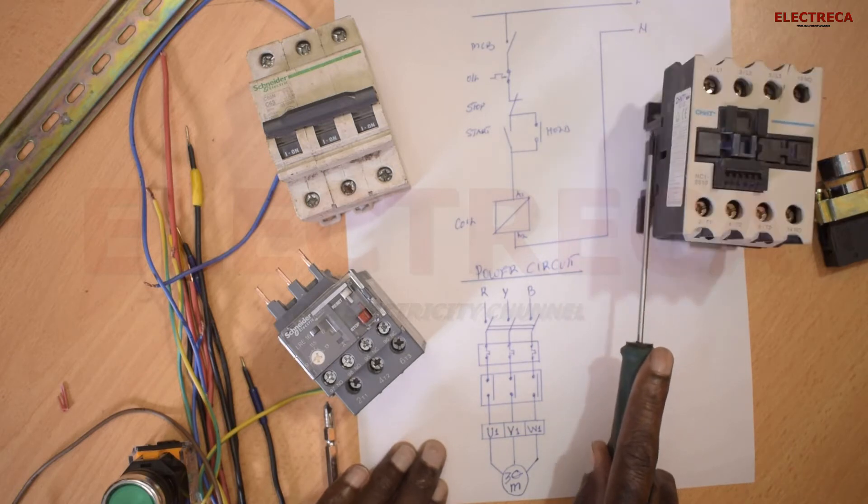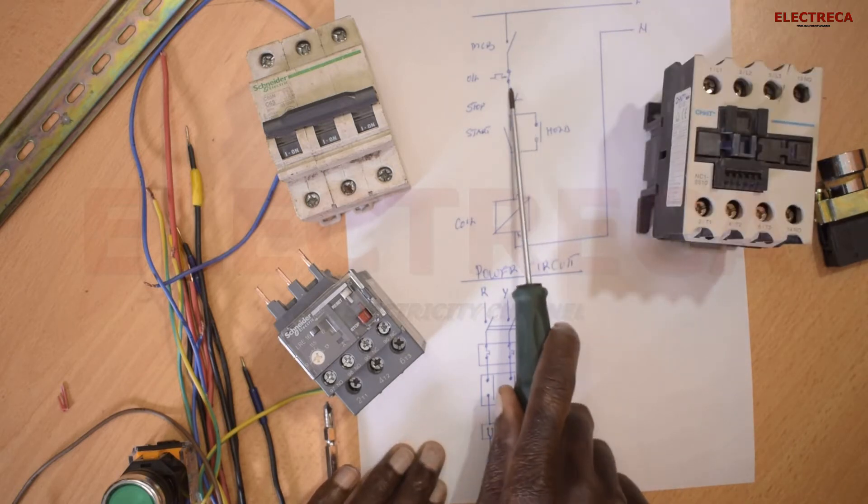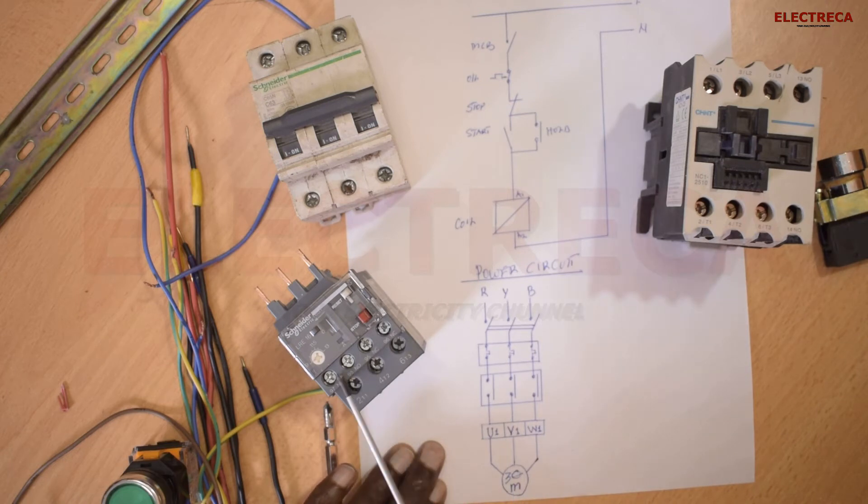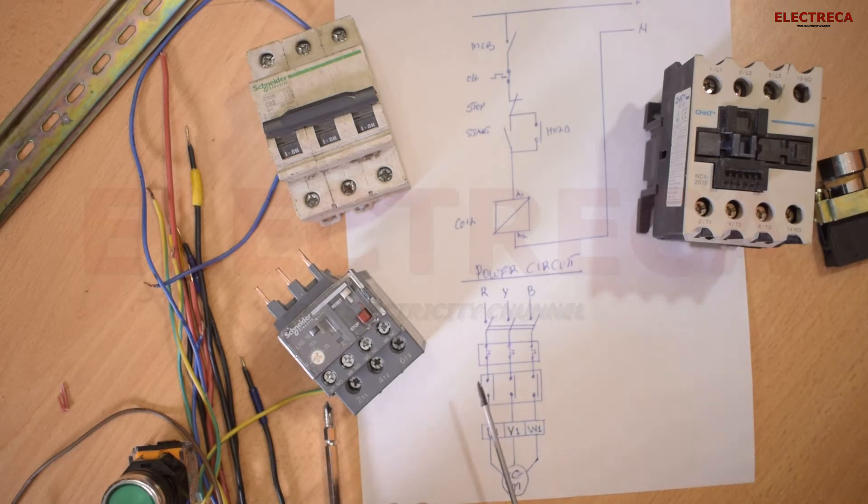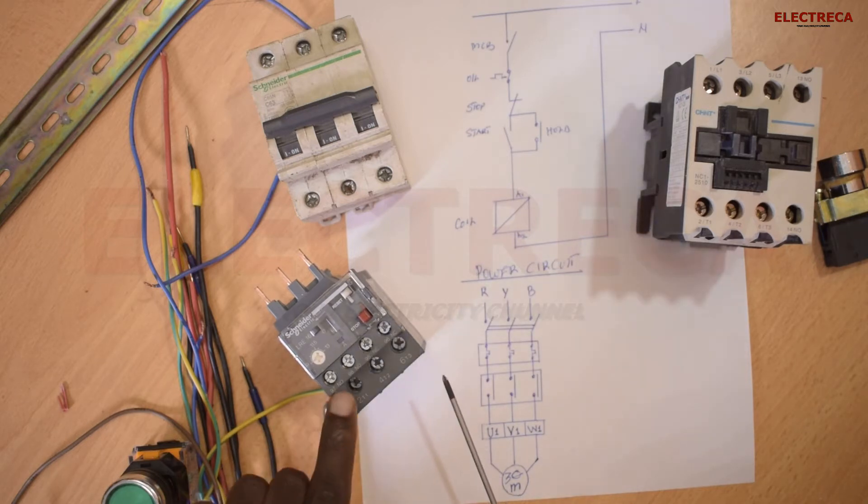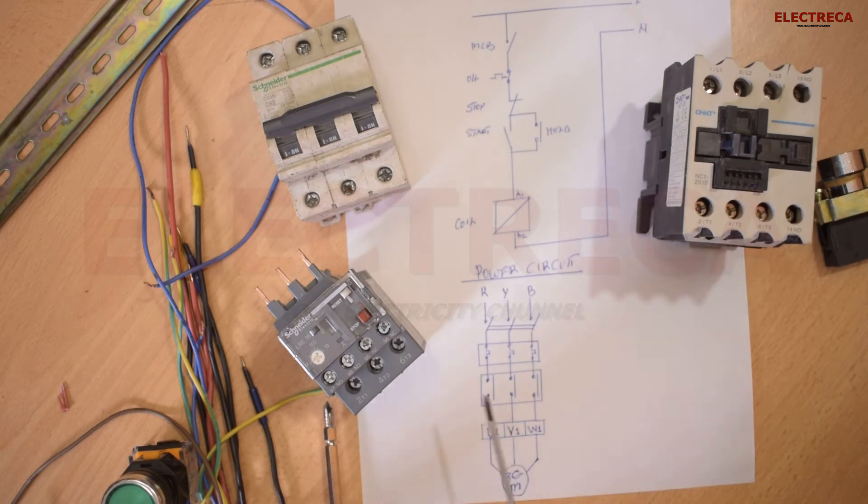Now you must probably see in an overload relay, you have auxiliaries you're seeing here on this overload relay. So you have got normally open here and you have got normally closed. Now where you need to connect your control should be normally closed.